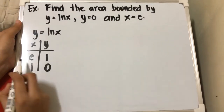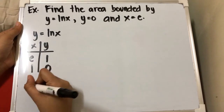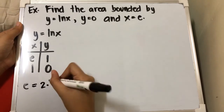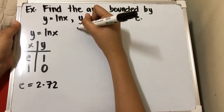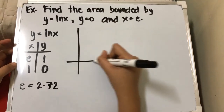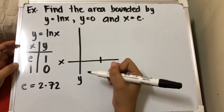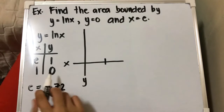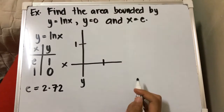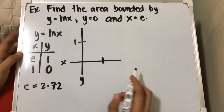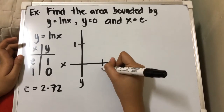e is approximately equivalent to 2.72. So if we plot our graph, we have 1 for our x — this is our x and this is our y. For y, we also have our 0 to 1. For x, we still have 2.72, so this is still 1.